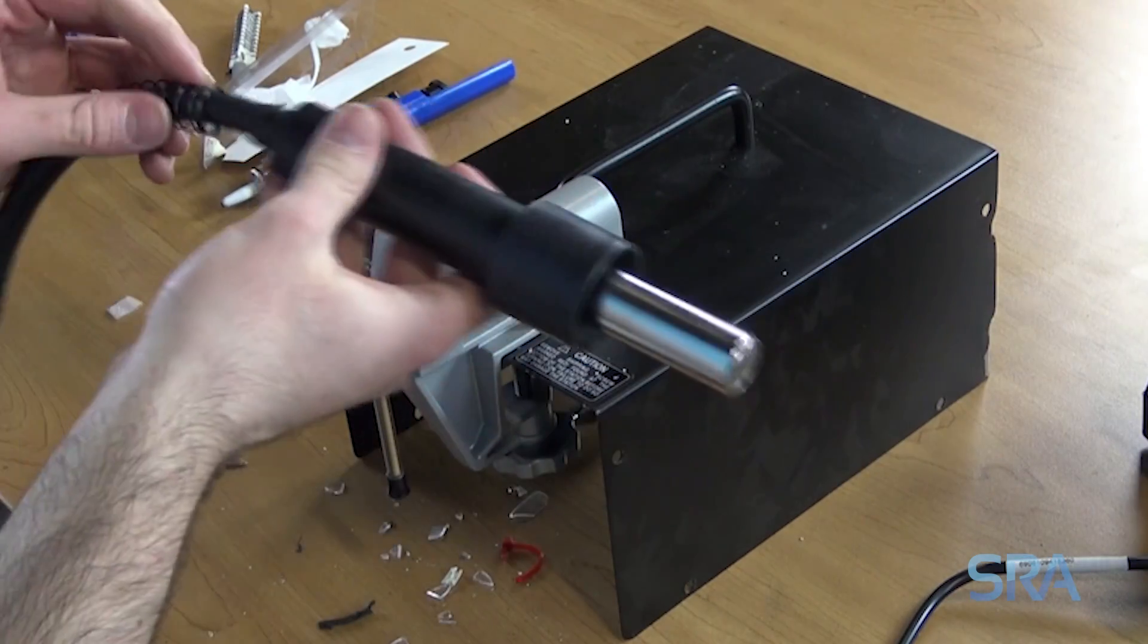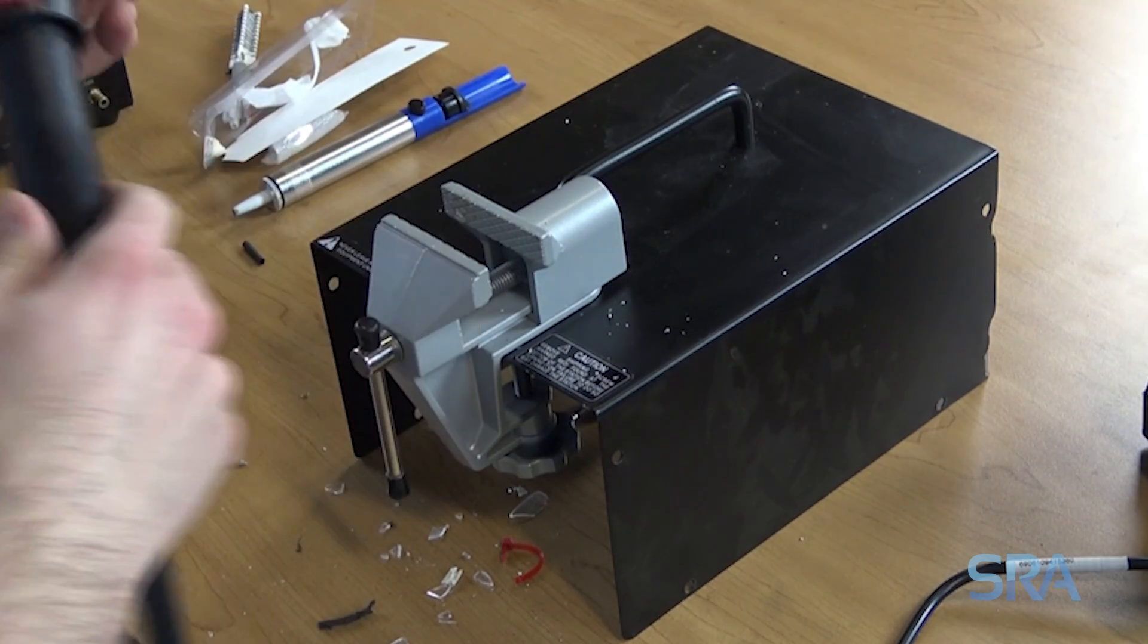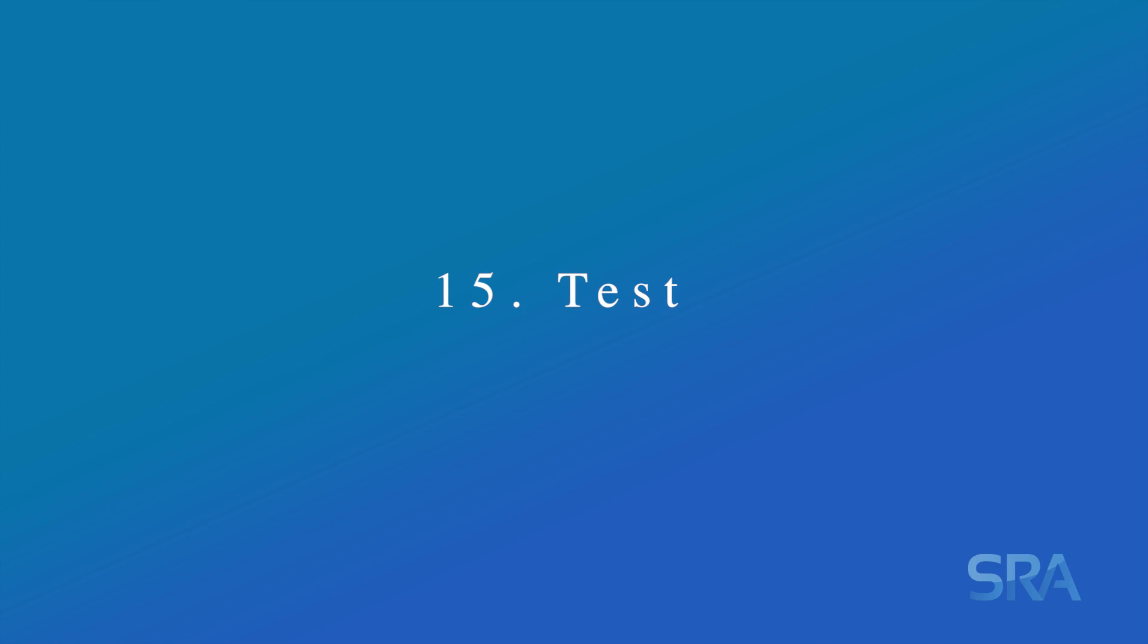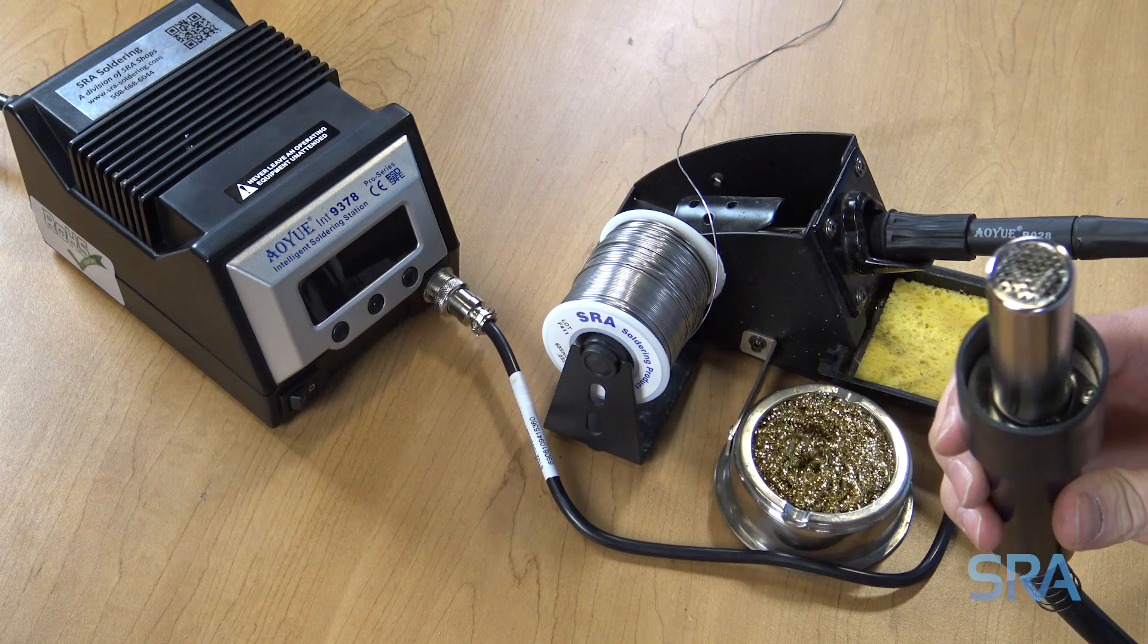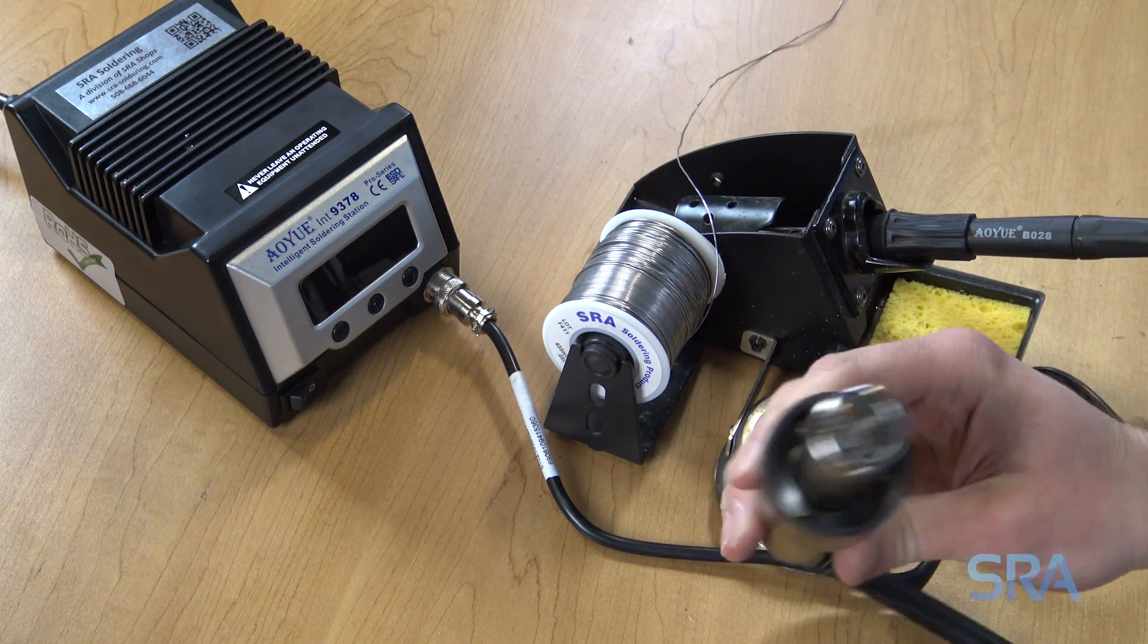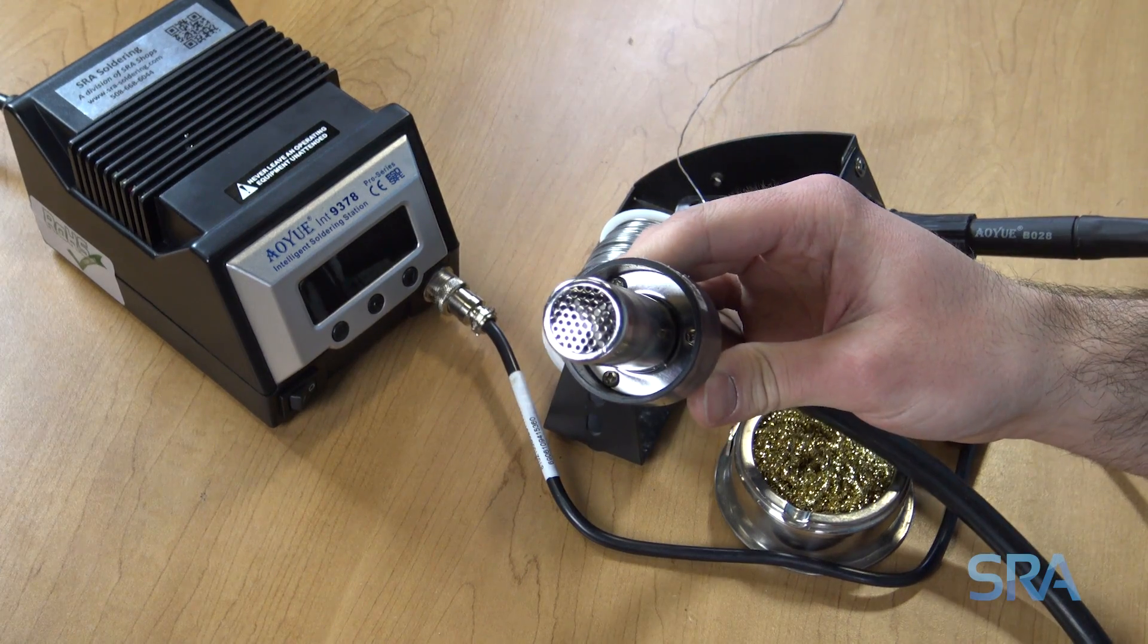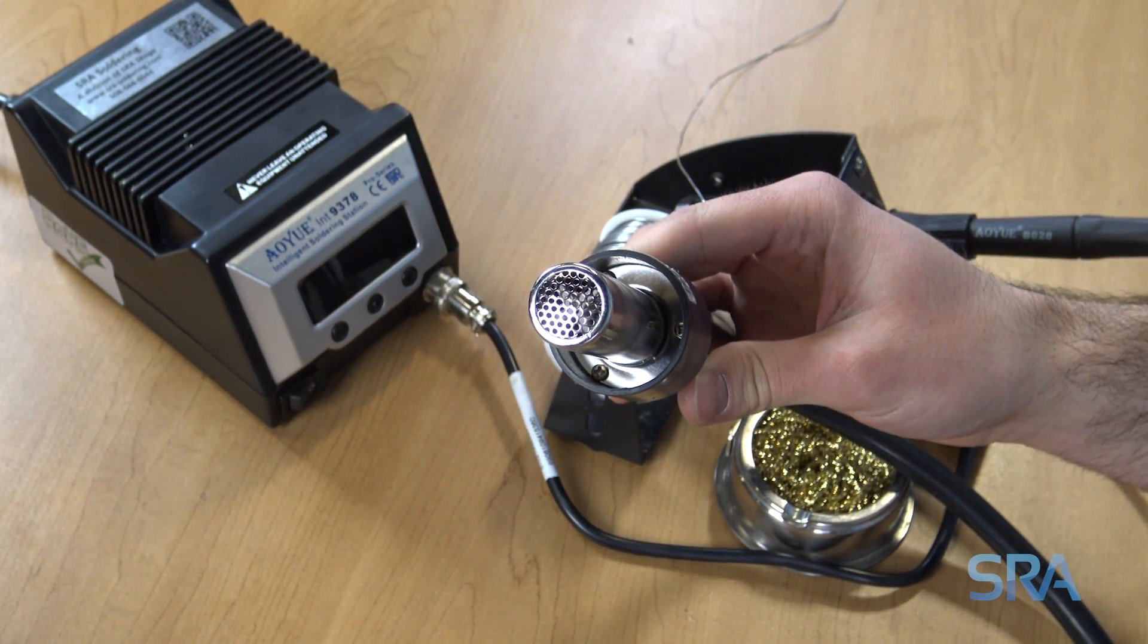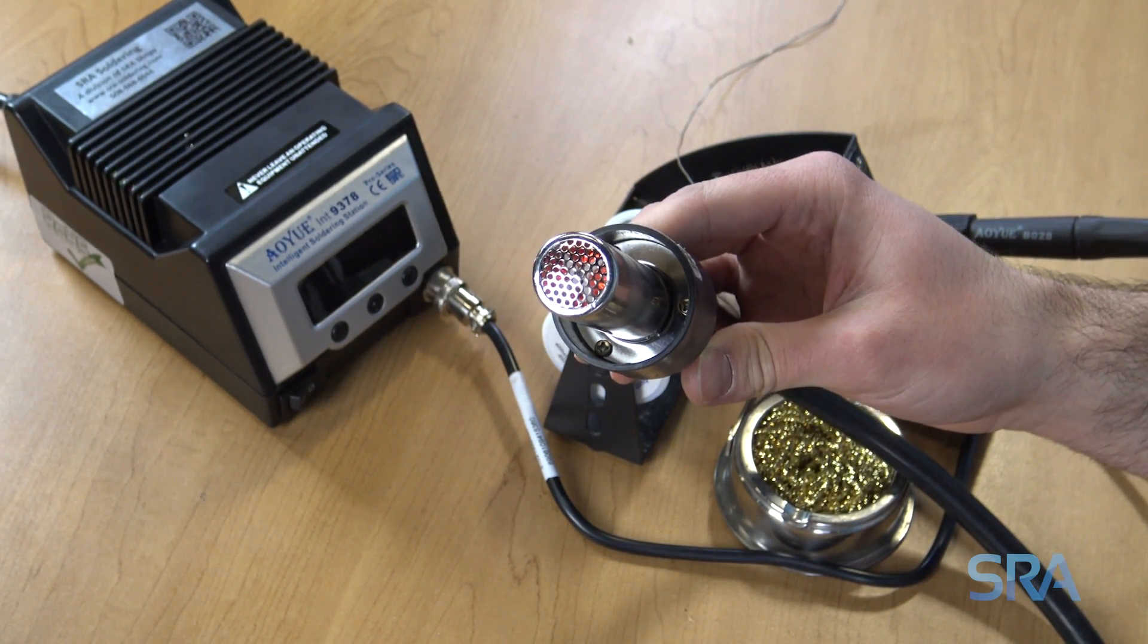Now we can slide the cable retainer back on. Now we're ready to test it. Turn the power on. It's going to heat up. Turn it up to 350.